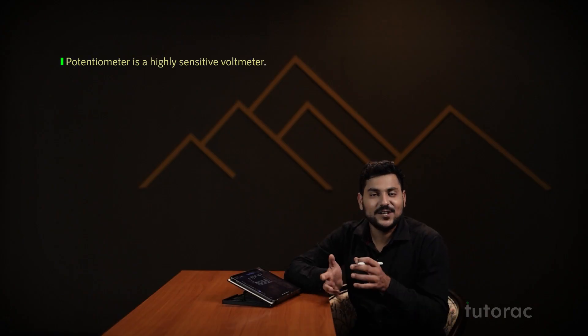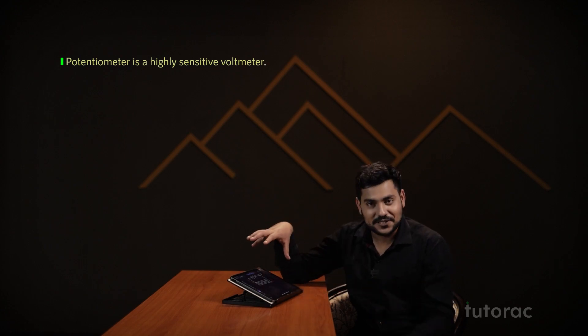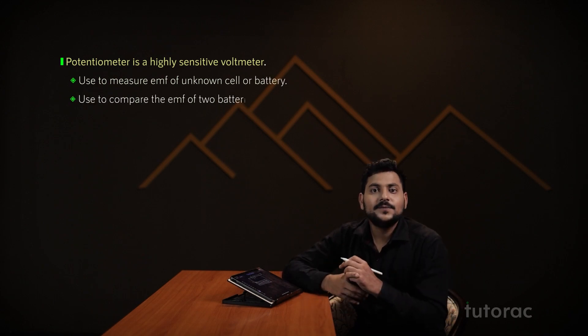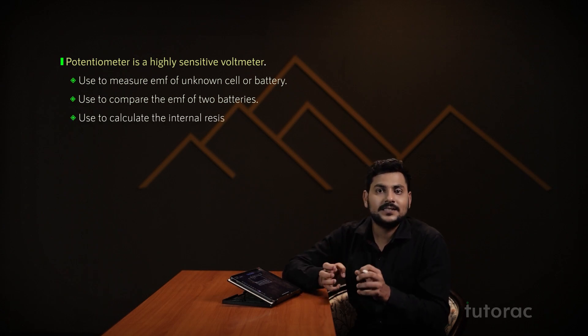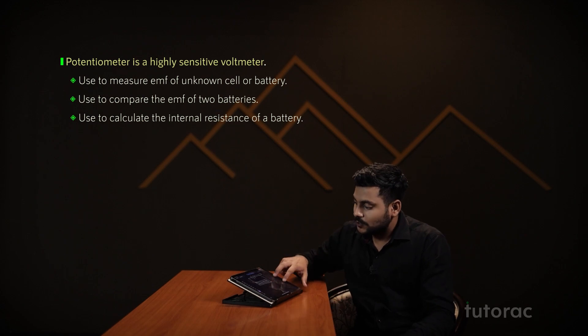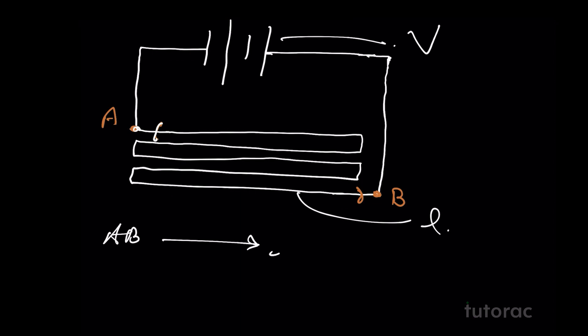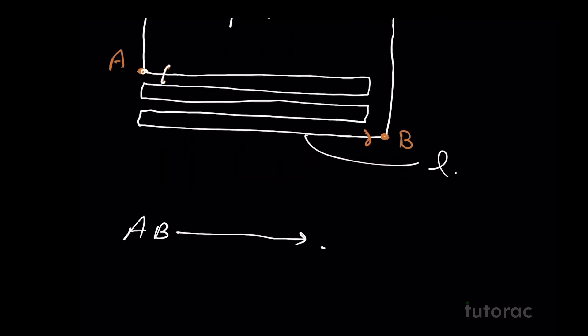Now it's time for us to understand another device that we call a potentiometer. Potentiometer is nothing but a highly sensitive voltmeter. We can measure many things with it — like the EMF of an unknown battery, compare the EMF of two batteries, or even calculate the internal resistance of a battery. In a potentiometer, we take a battery and connect it with a very long wire from A to B with length l.